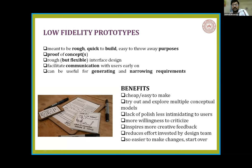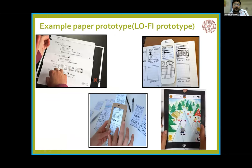Here are some low fidelity prototypes — like this mobile app. This is a small mobile frame made of paper. You can move the paper to see the next screen — what is coming on the next screen. By this we can also change the screen and see the interface that the current interface must be.